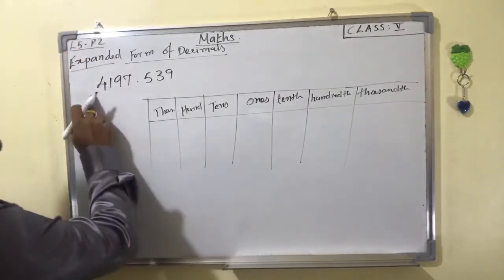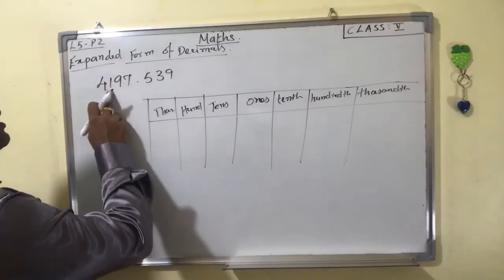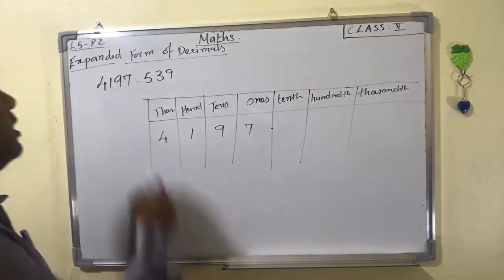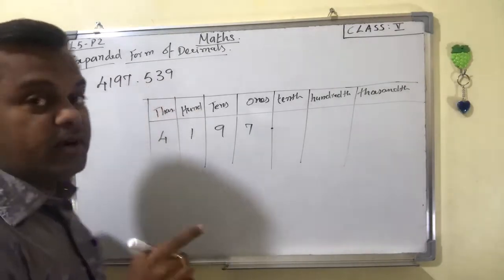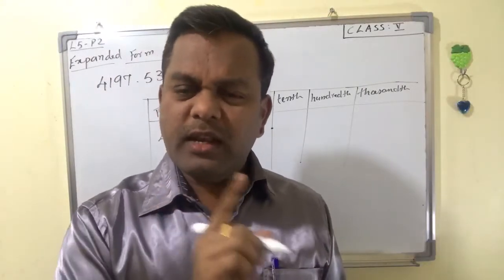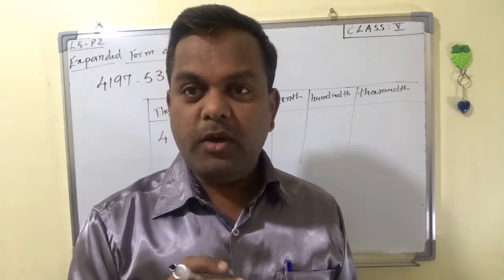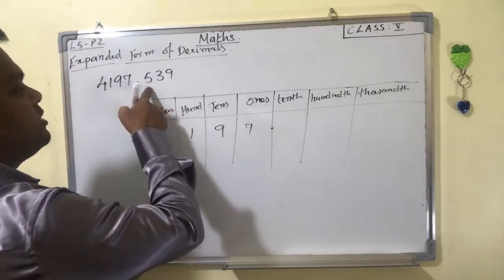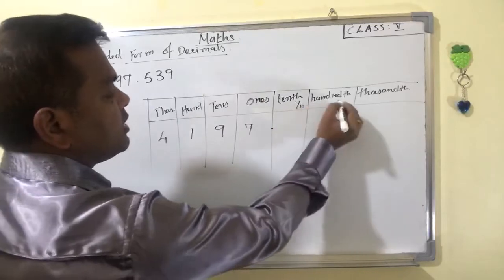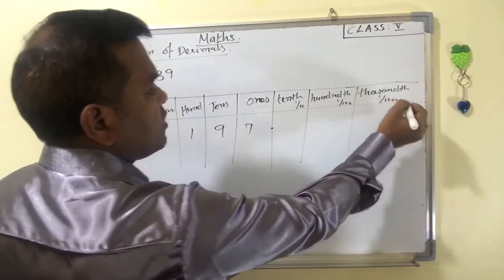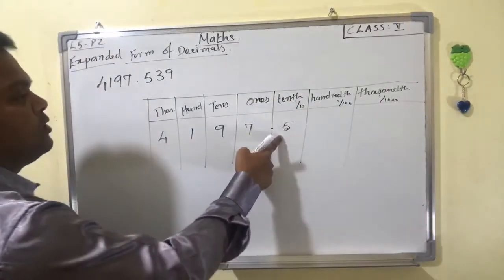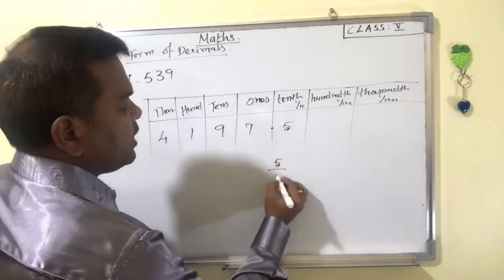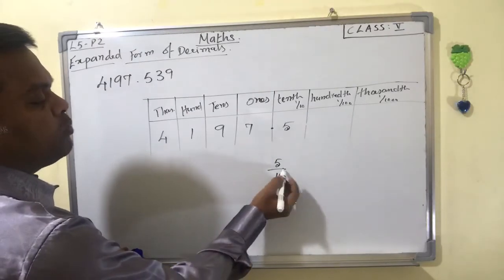Now for this whole number we can easily place the digits: four thousands, one hundred, ninety, seven. After the decimal point — after the ones place — we have five, three, nine. Numbers after the point are less than one, that's why we write them after the ones place. The place value of five is one-by-ten, so five becomes five-by-ten. To write 5/10 as a decimal, move the point one decimal place to the left: 0.5.